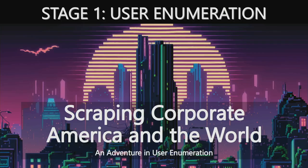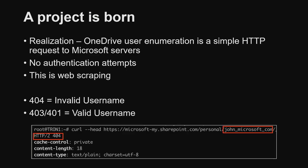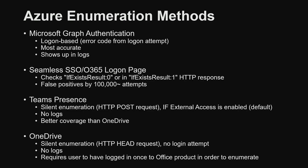With that, we arrive at Stage 1: user enumeration. OneDrive can enumerate users silently via HTTP — it's just a HEAD request, and you can tell if a user is valid or not. It's basically web scraping. There's no authentication attempt, unlike Graph and other methods where you have to actually try to make a login, which is problematic at large scale. OneDrive doesn't have any of those problems — and nobody can see it except Microsoft.